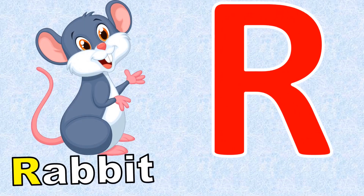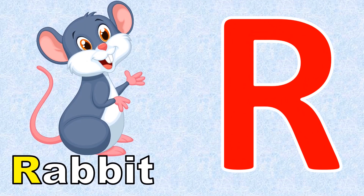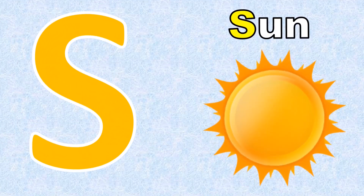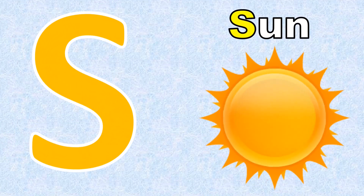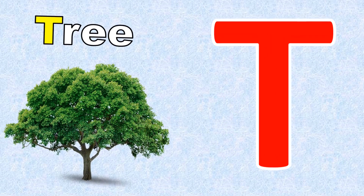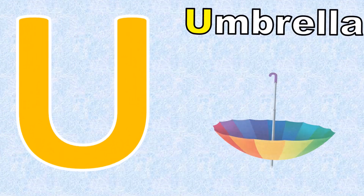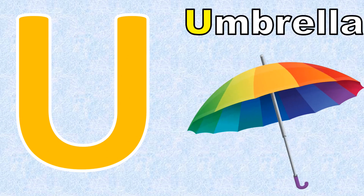R for Rabbit. S for Sun. T for Tree. U for Umbrella.